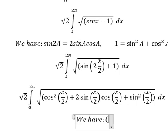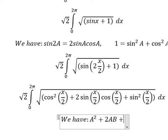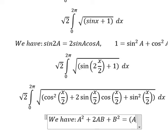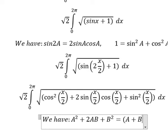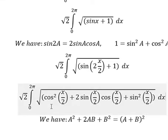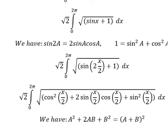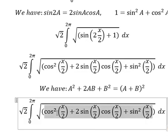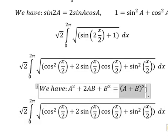We have the formula: A squared plus 2AB plus B squared equals to (A plus B) to the power of two. So we need to transform this expression into that perfect square form.